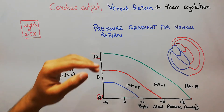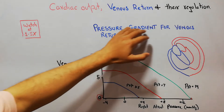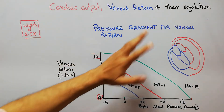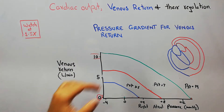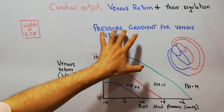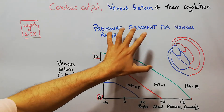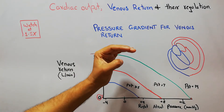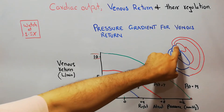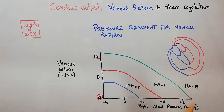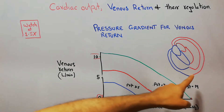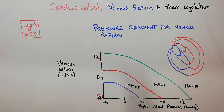Today in this lecture we are going to discuss the pressure gradient for venous return. Pressure gradient is simply the pressure difference between the right atrial pressure and the mean systemic filling pressure.